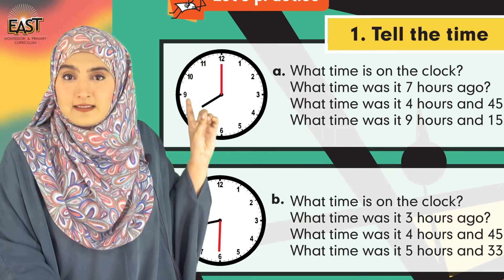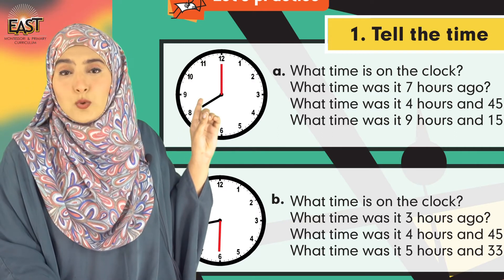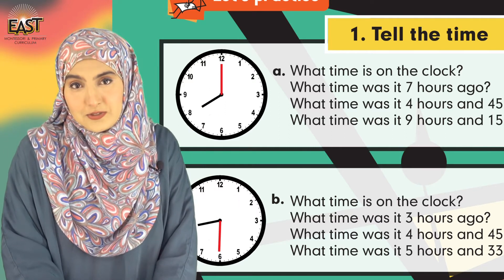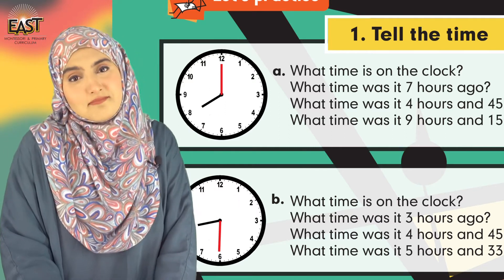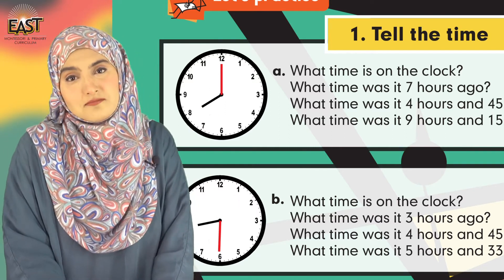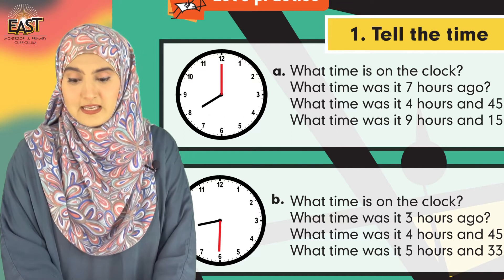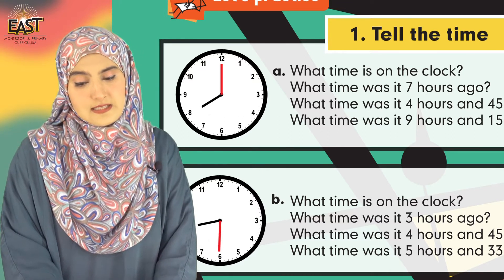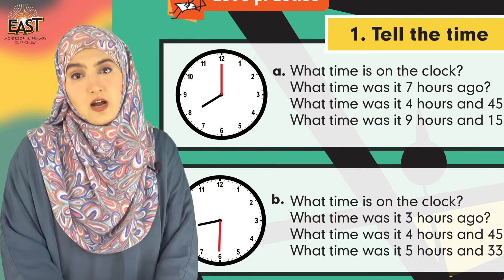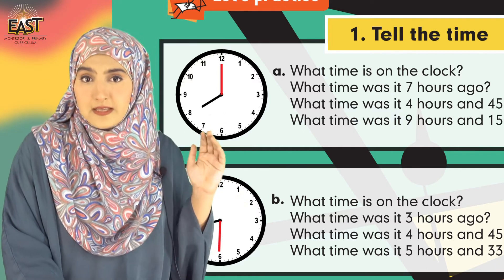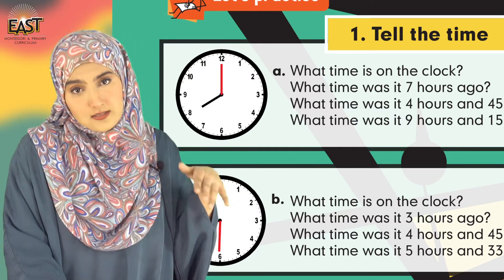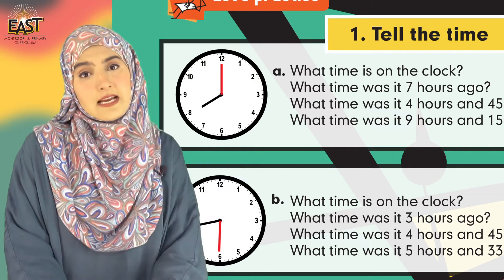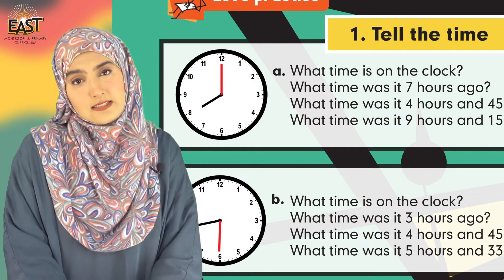It's exactly eight o'clock, so the answer is eight o'clock. Easy — very good! Now: what time was it seven hours ago? Seven hours pehle time kya ho raha tha?